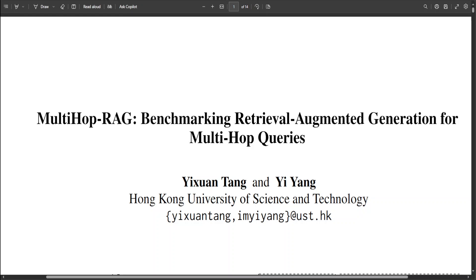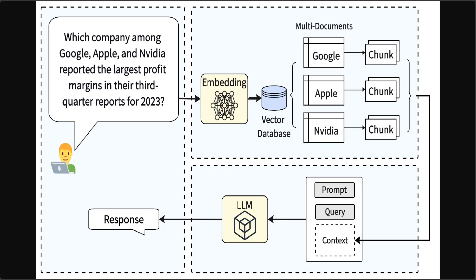Multi-hop RAG seems to be a promising prospect and a valuable resource for the community in developing effective RAG systems. This is still an evolving project. Look at this example from their GitHub repo — I'll also drop the link in the video's description. If you look at this diagram, in real-world RAG applications, a user's query often necessitates retrieving and reasoning over evidence from multiple documents.